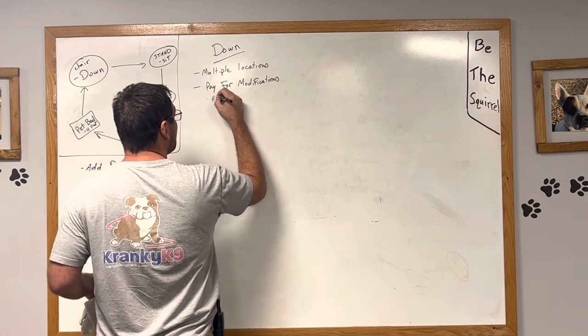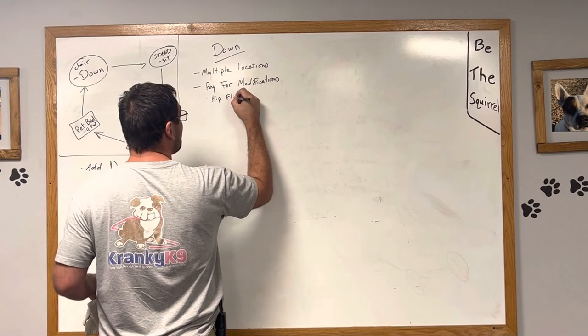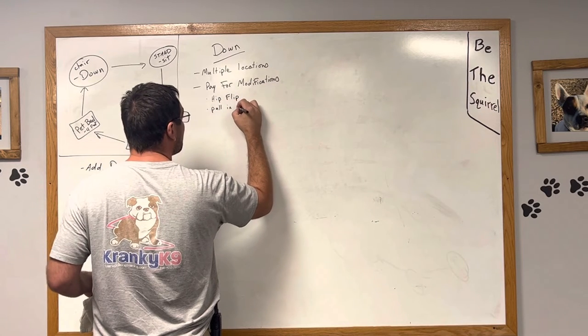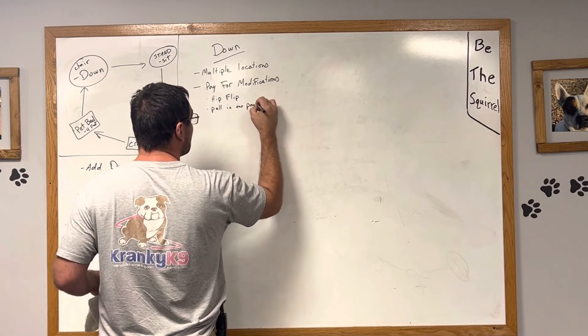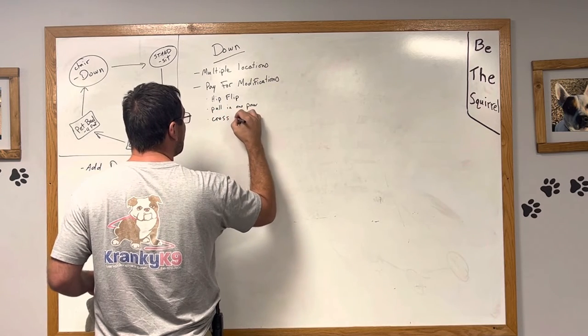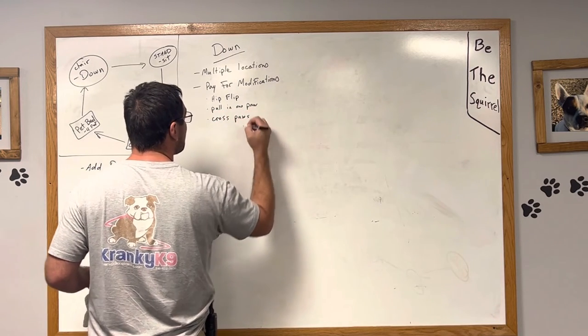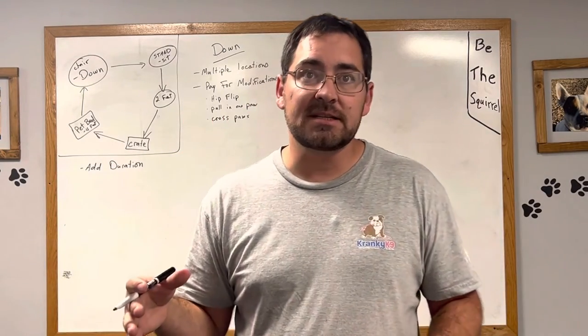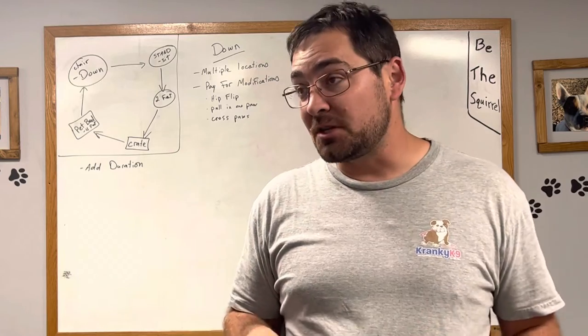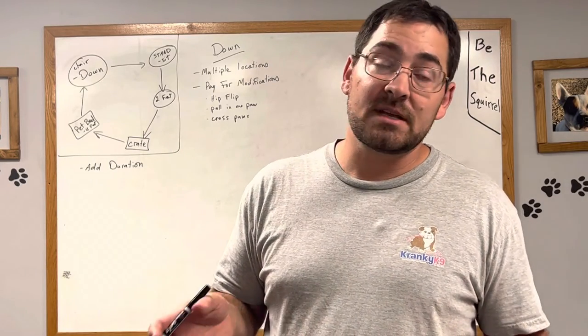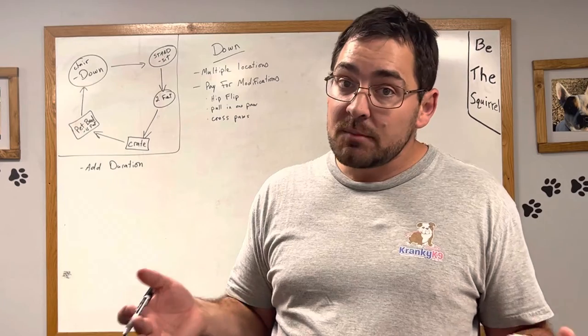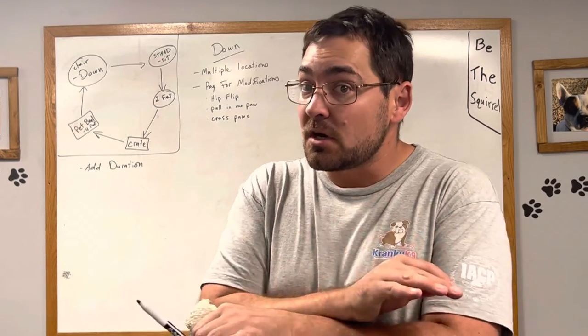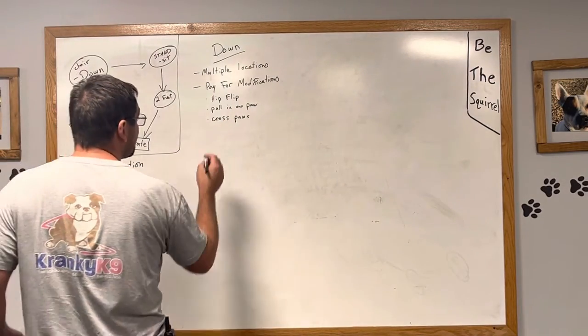So each one of those behaviors that dogs naturally do as they relax, we're going to mark them and pay for them. Hip flip. That's probably the big one you want to look for. Pull in one paw. Cross the paws. Now guys, don't get upset if your dog doesn't cross his paws. That's a really rare one. My border collie does it. I had a St. Bernard in recently that did it. It's really cute when they do it, but it's rare. Maybe 10% of the dogs that come through naturally do it. If your dog pulls one paw in instead of crossing it, that's what he does. Just accept it.